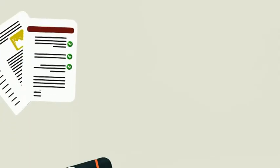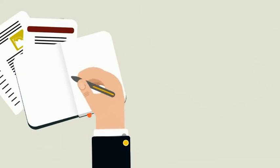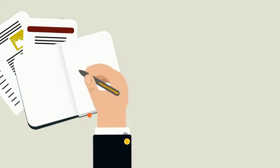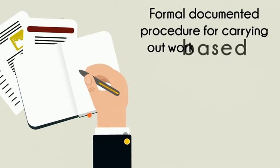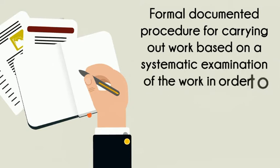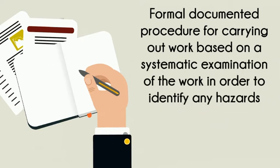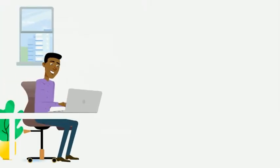Section 3.6 looks at safe systems of work for general work systems. So first of all, what is a safe system of work? It's a formal documented procedure for carrying out work based on a systematic examination of the work in order to identify any hazards.